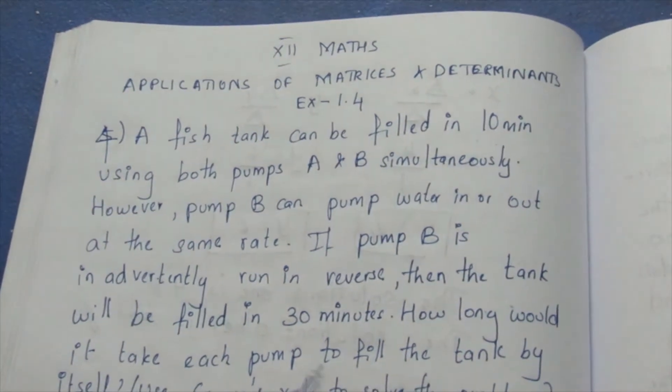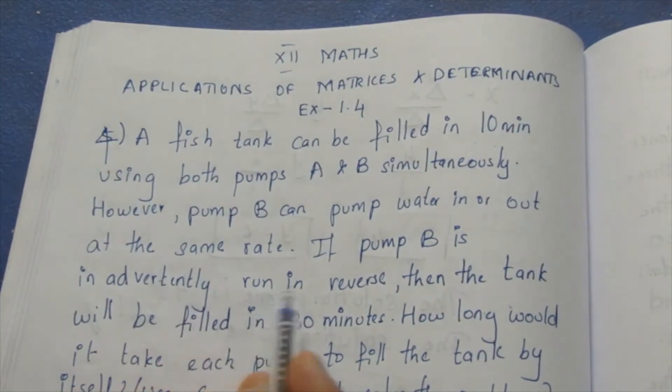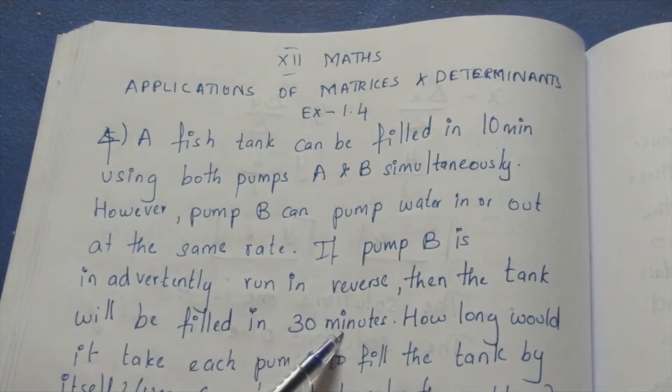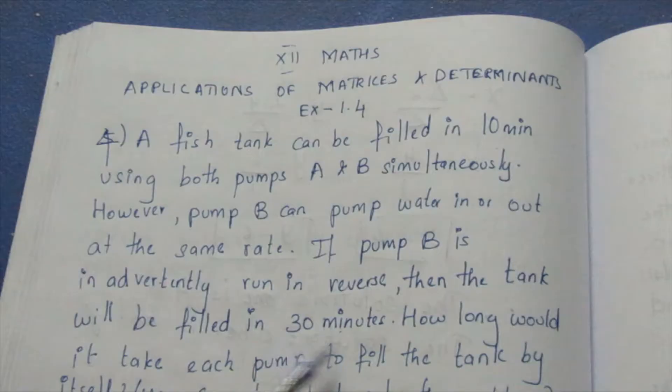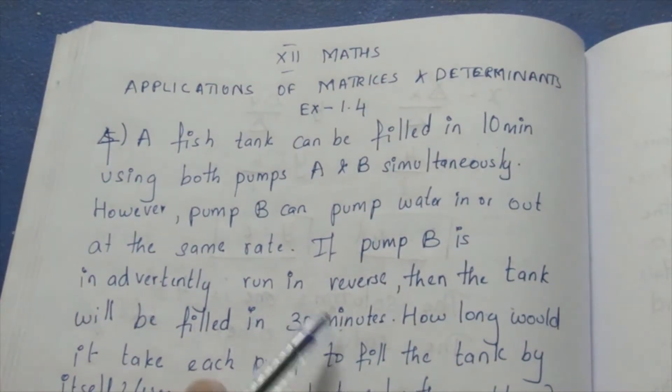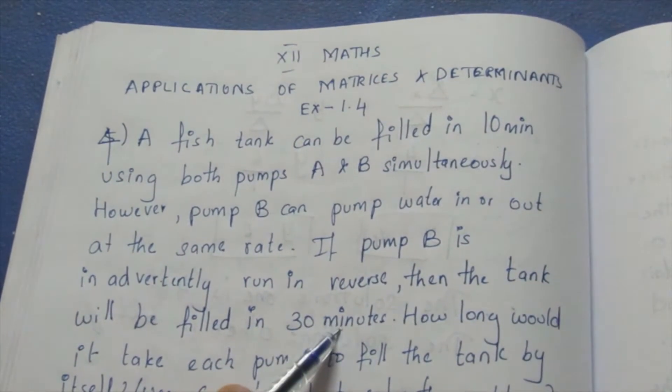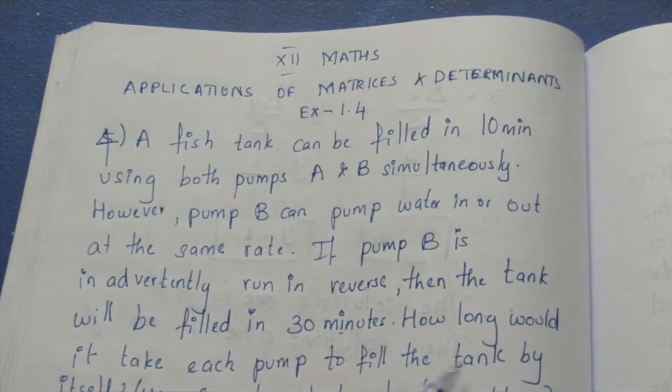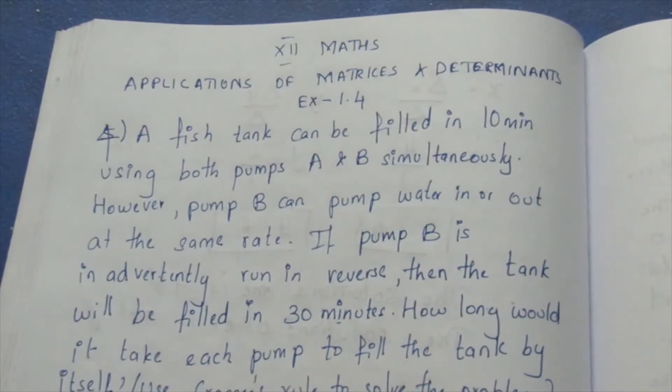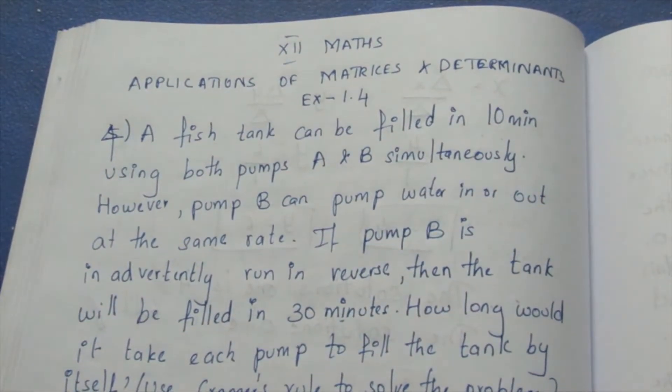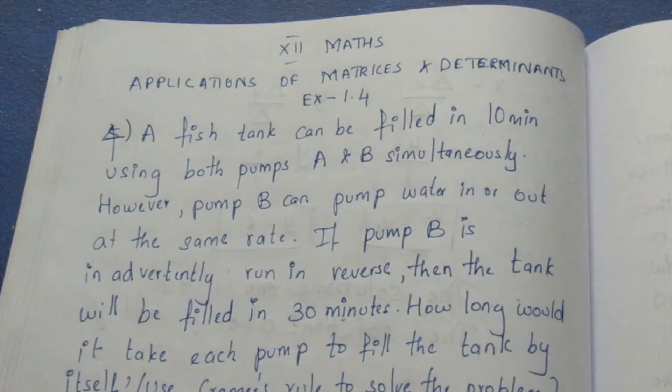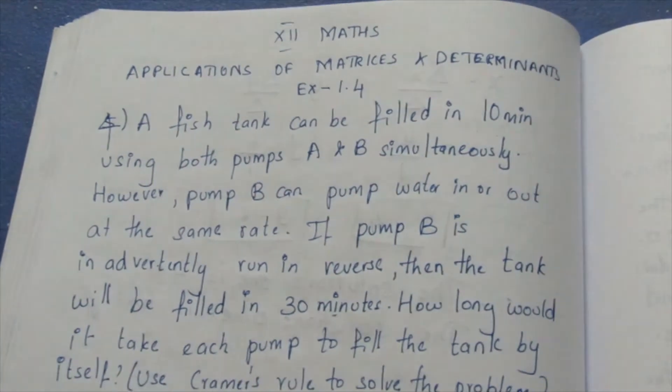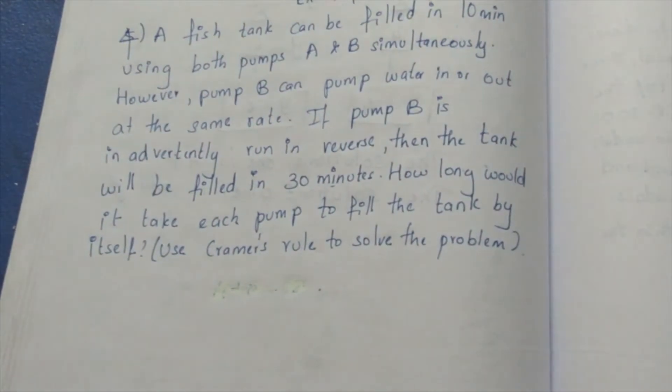If pump B is inadvertently run in reverse, the tank will be filled in 30 minutes. How long would it take each pump to fill the tank by itself? We can use Cramer's rule to solve the problem.